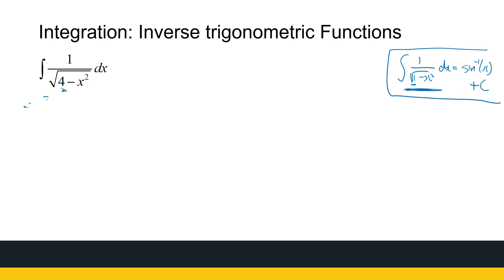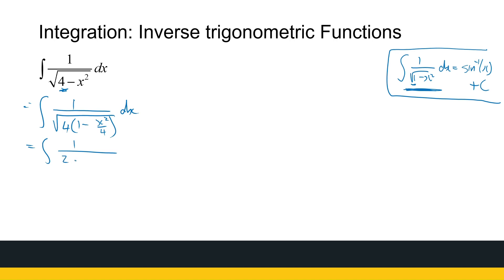We take four out as a common factor, giving one over the square root of four times the bracket one minus x squared over four dx. The square root of four is two, so we get two times the square root of one minus x squared over four. We can write x squared over four as x over two squared, so we have one half times the integral of one over the square root of one minus x over two squared dx.